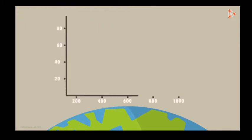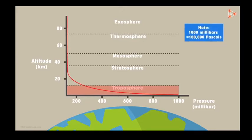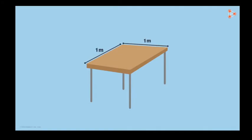Let's look at an interesting graph which represents pressure at a particular altitude and how the pressure varies from layer to layer. The troposphere layer is closest to the surface of the earth and the pressure in this layer goes up to 100,000 Pa, where Pa is the SI unit of pressure. If I take a table with an upper surface of 1 by 1 meter, the pressure exerted by air on the table in the downward direction is greater than 1 lakh Pa.